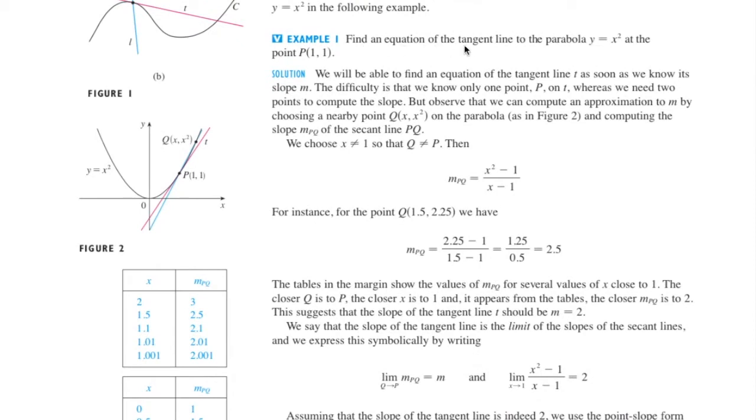Find an equation of the tangent line to the parabola y equals x squared at the point (1,1). So the point (1,1) is here. How would you find the tangent line? We use two points to find the slope like they do here. They use (1.5, 2.25) and the original point (1,1) here. 1.5 and it becomes 2.25, so it's your x value and y value. Y subtract y, x subtract x.